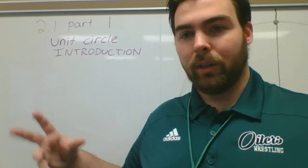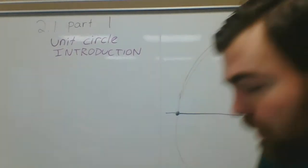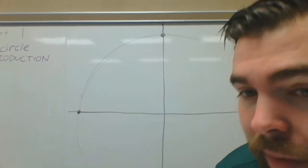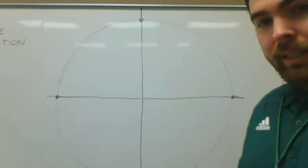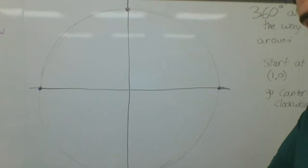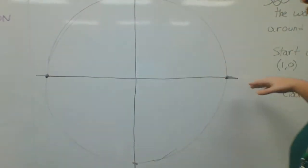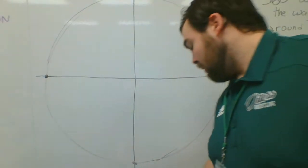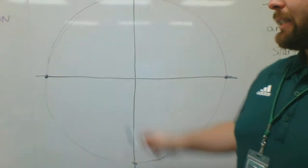2.1 Part 1: Unit Circle Introduction. A unit circle is something we're going to be using a lot in trigonometry. I want you to draw a large circle like this along an axis. You can think about this as the x-axis and this as the y-axis.